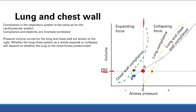If your lung volume is below functional residual capacity — for example, the patient forcibly expired additional air — the midpoint between the chest wall and lung compliance curves shows an expanding force. When the lung-chest wall system is below FRC, it wants to expand. If we pushed out some air, the lung is going to want to expand and fill up a little more air.